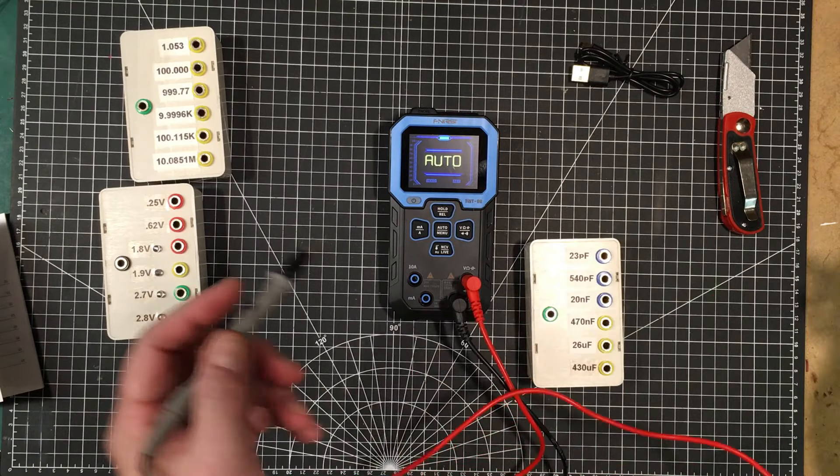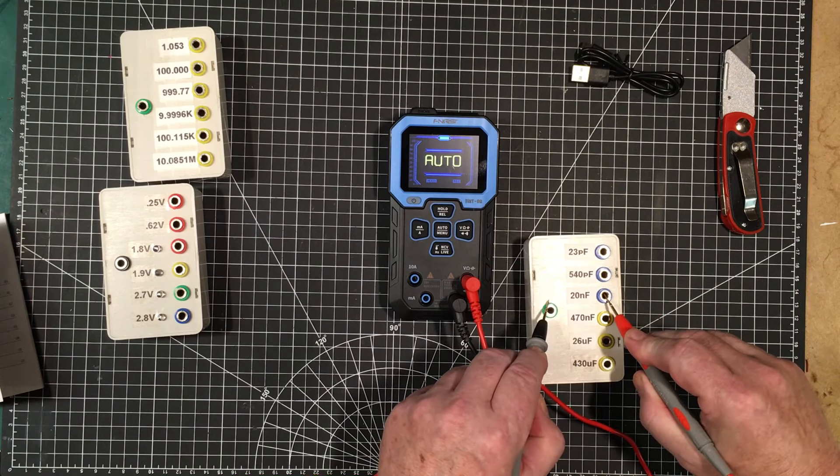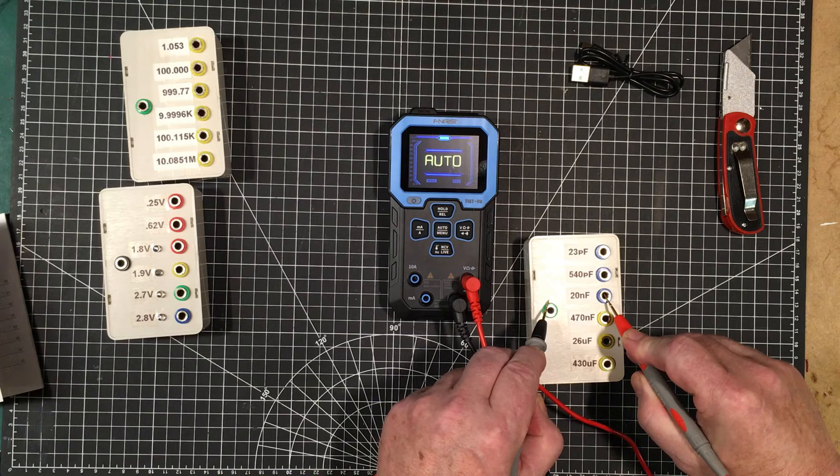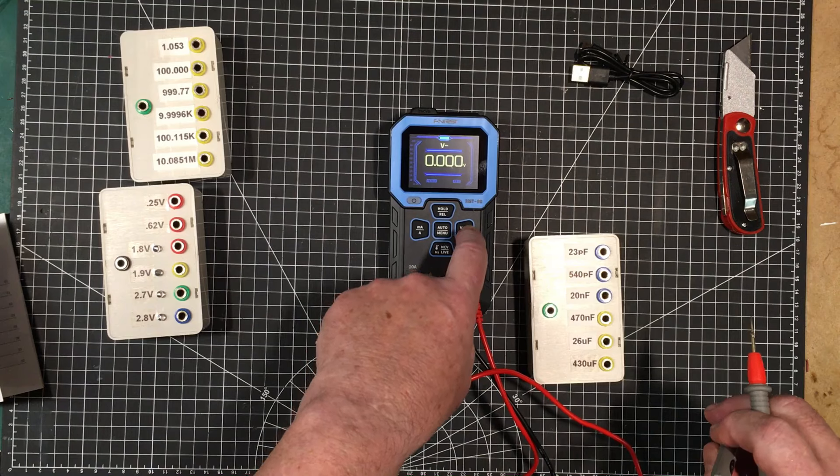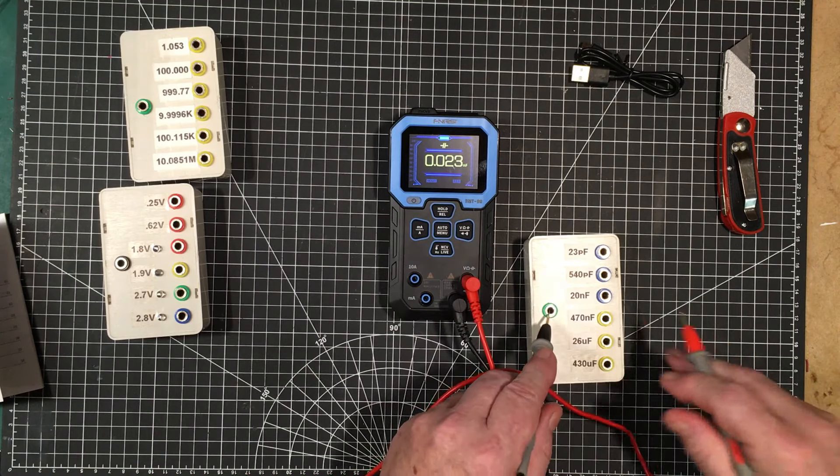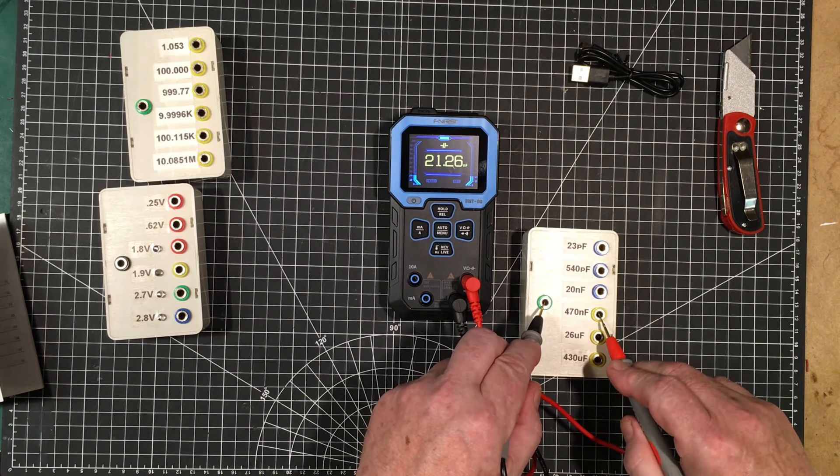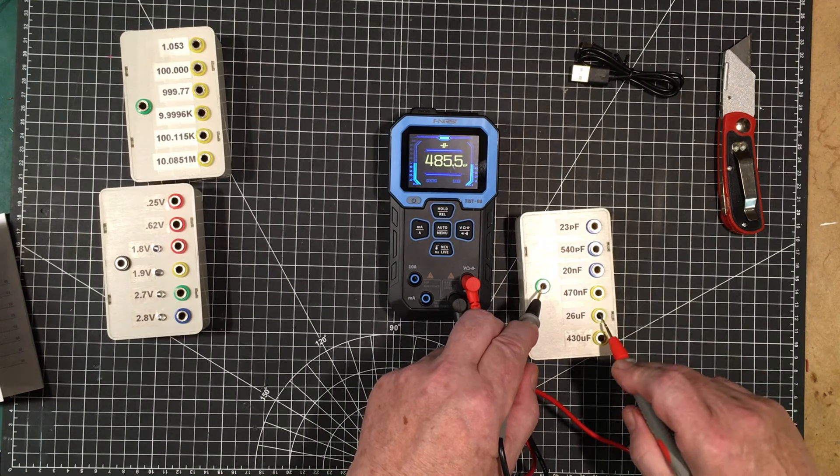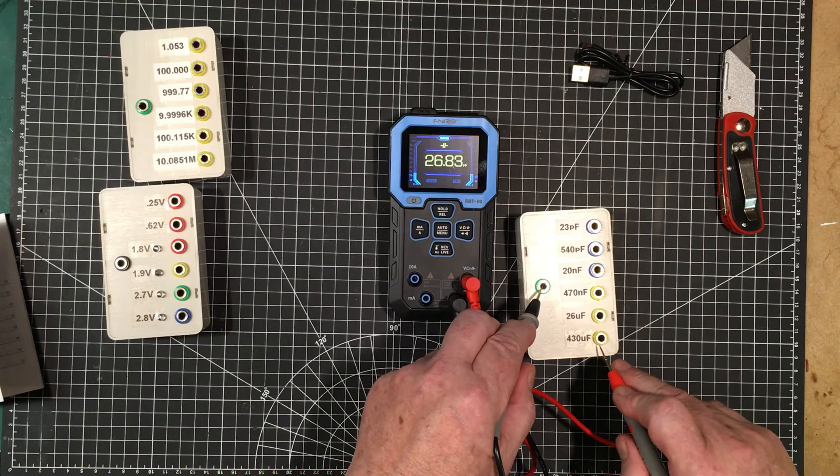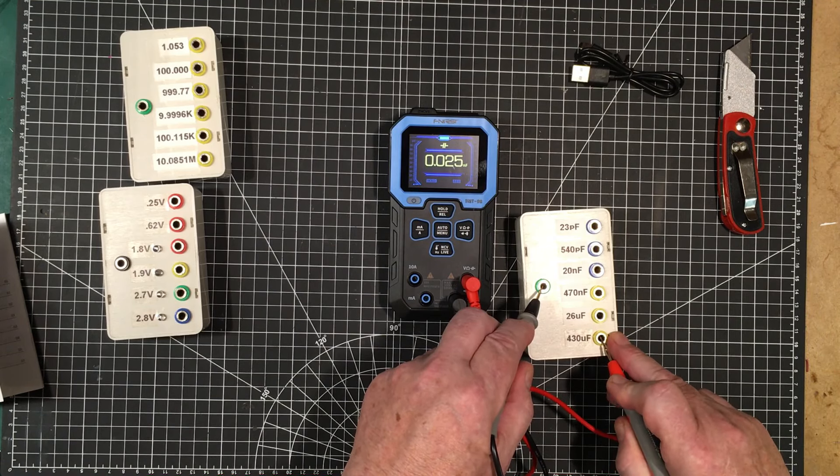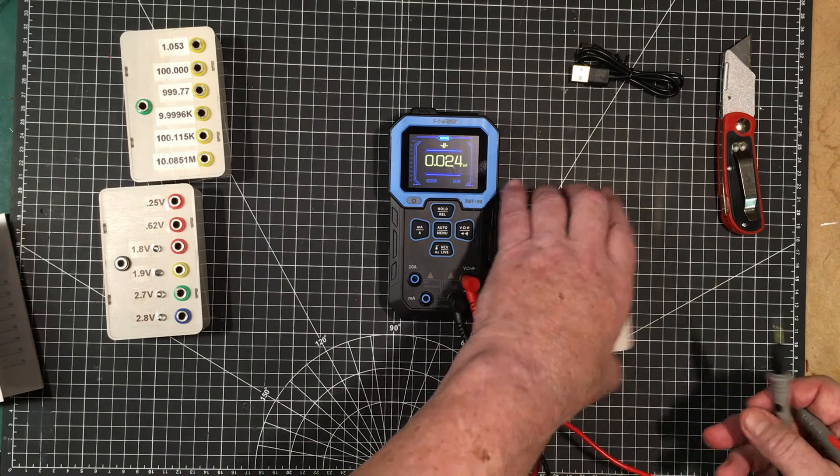But it wasn't able to auto detect that these were diodes. Let's see if it can do so with capacitors. Let's try some in the middle range here. Nope. It's not being able to do that. Let's see when we go into that mode, what do we get here. That's right on. That's pretty close. A little optimistic there. Pretty good. This is going to take a while. Very nice.